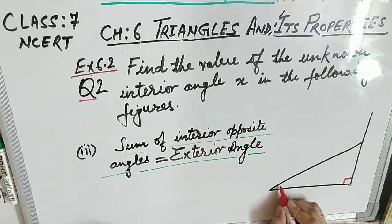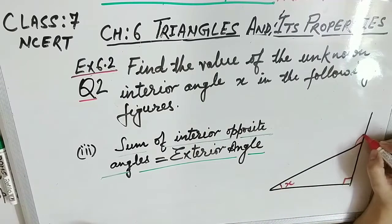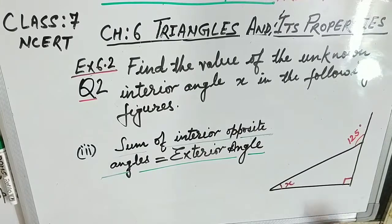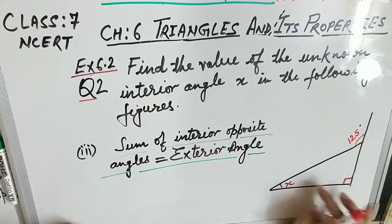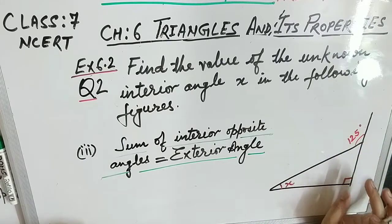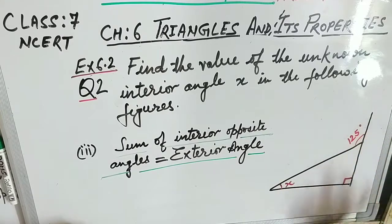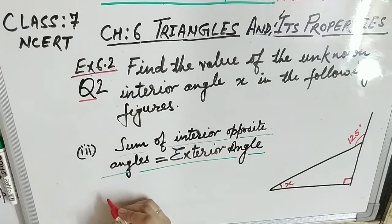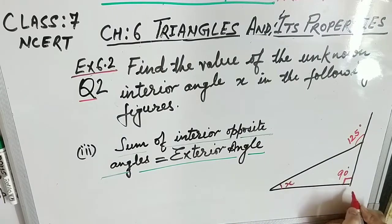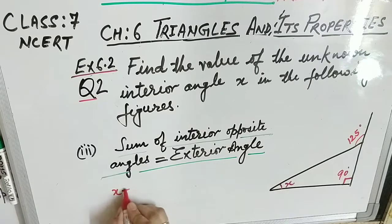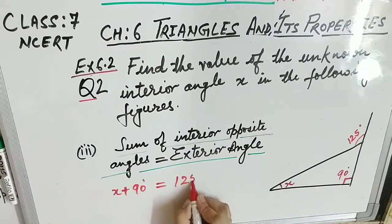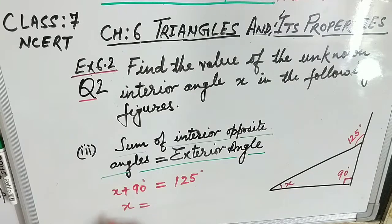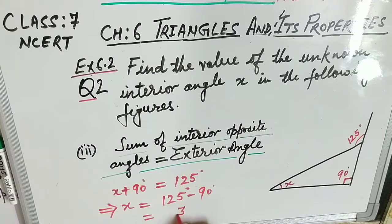Figure 3: the right angle symbol indicates one interior angle is 90°. The exterior angle is 125°. These are the two opposite interior angles of that exterior angle. So x + 90° = 125°, which gives x = 125° − 90° = 35°.